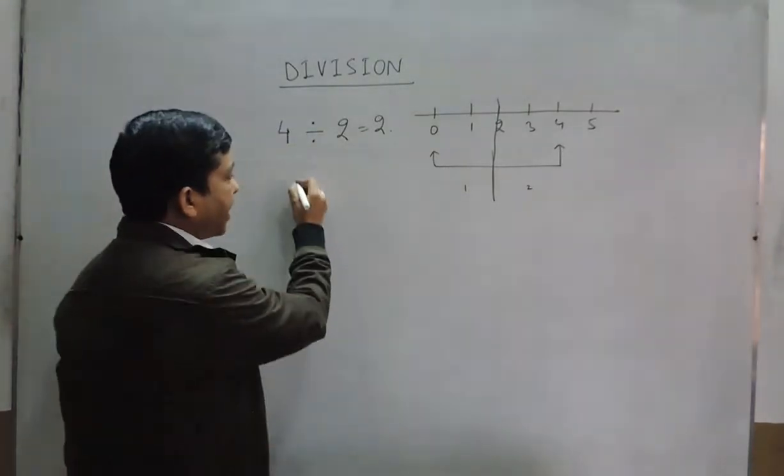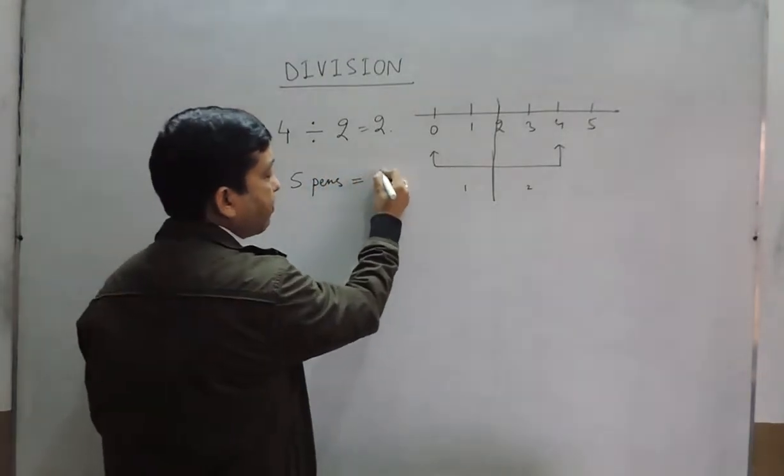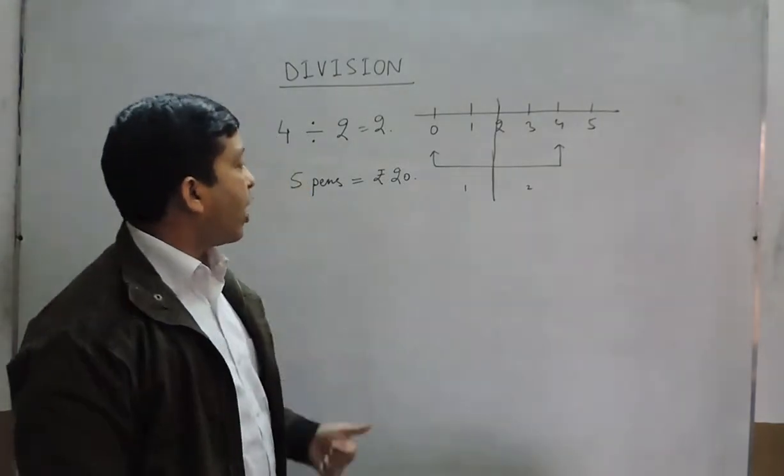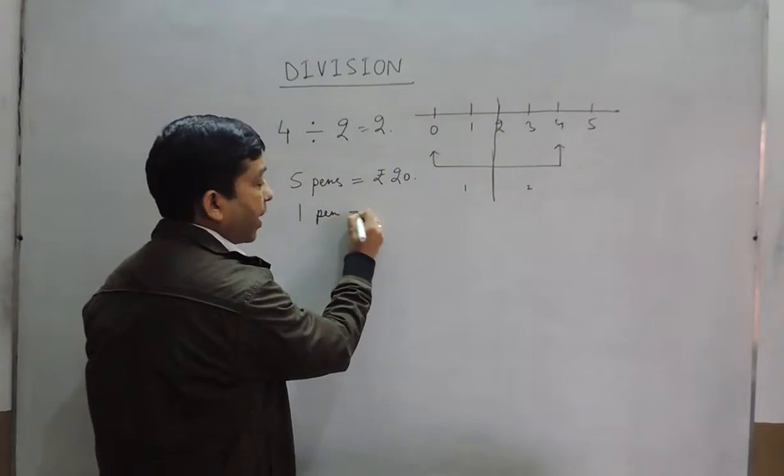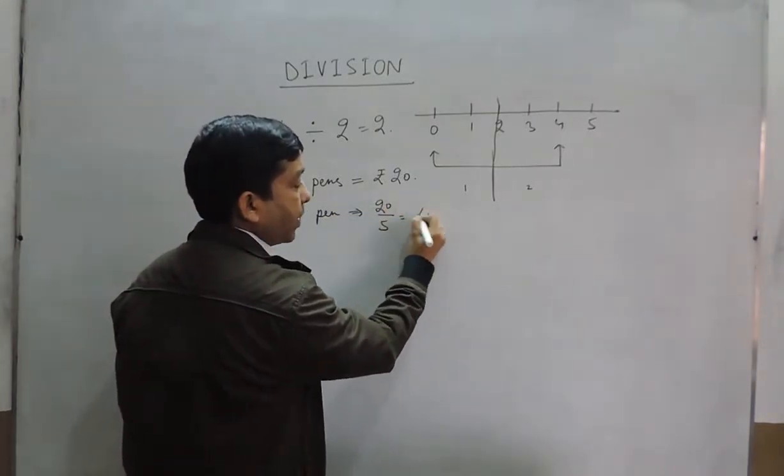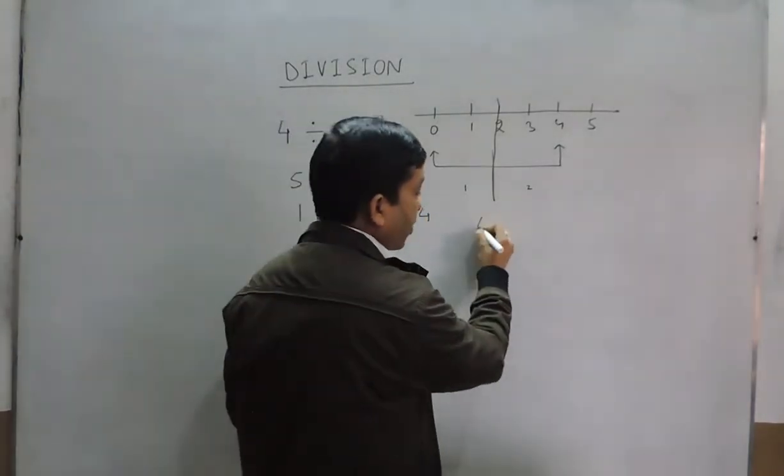For example, if somebody says I have purchased five pens and the cost of five pens is rupees 20, and somebody wants to purchase one pen, how much money should he carry? For one pen, he should carry 20 divided by 5, and that is 4 rupees.